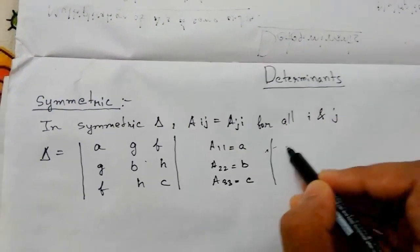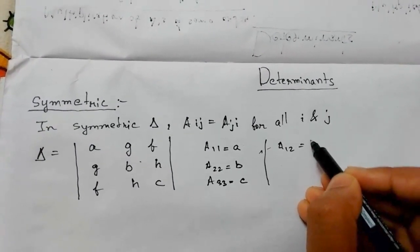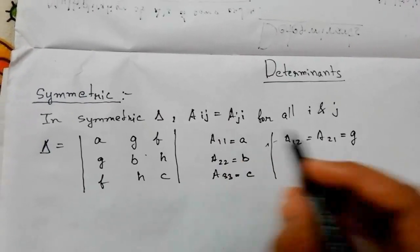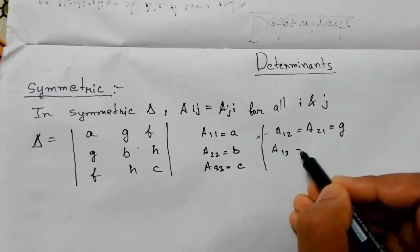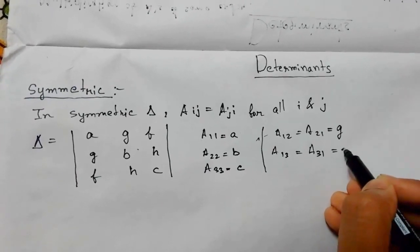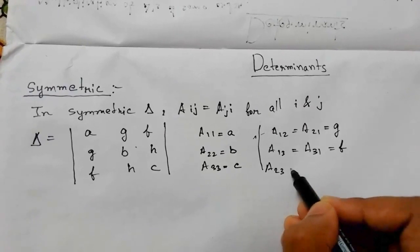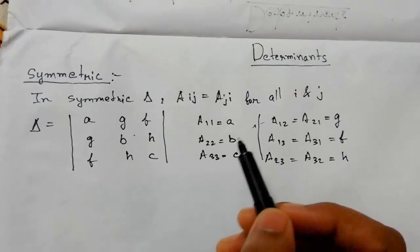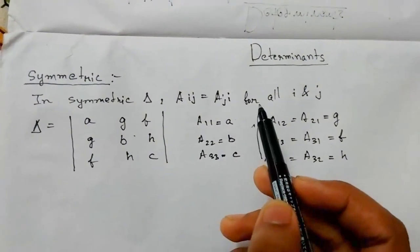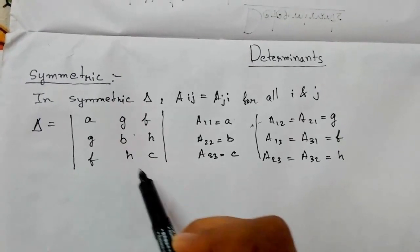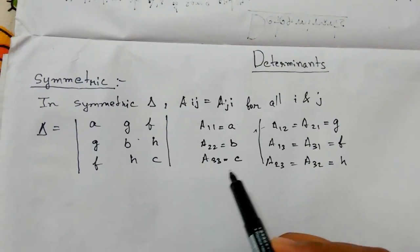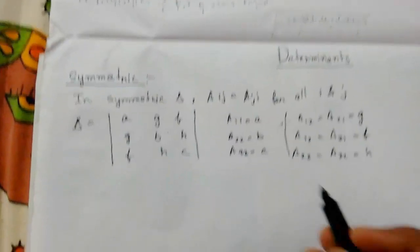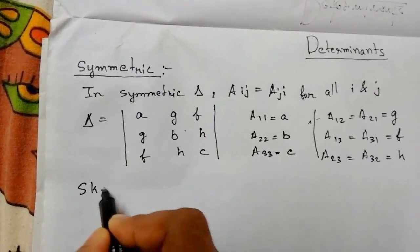a12 equals a21, and both equal g. a13 equals a31, and both equal f. a23 equals a32, and both equal h. So in a symmetric determinant, a of ij equals a of ji, and the principal diagonal elements will never change — they remain the same.